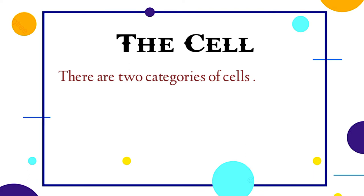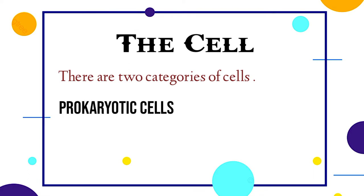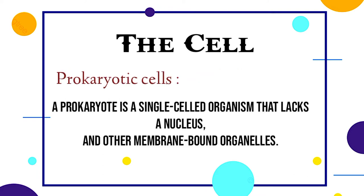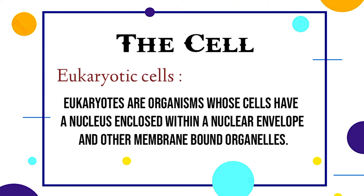There are two categories of cells: prokaryotic cells and eukaryotic cells. A prokaryote is a single-celled organism that lacks a nucleus and other membrane-bound organelles. Eukaryotes are organisms whose cells have a nucleus enclosed within a nuclear envelope and other membrane-bound organelles.